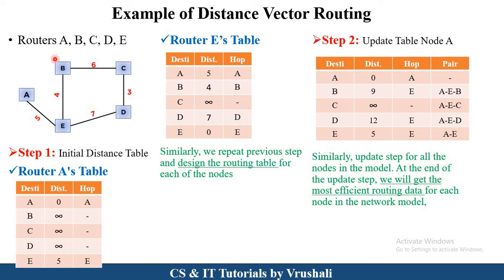The first step is to initialize the distance table. The source node is router A, so router A generates a routing table. This routing table has three columns: destination, distance, and hop. A to A: distance is 0. A to B: no direct path, so distance is infinity. A to C: no direct path, infinity. A to D: also infinity. A to E: distance is 5, and the hop is the next node A to E.